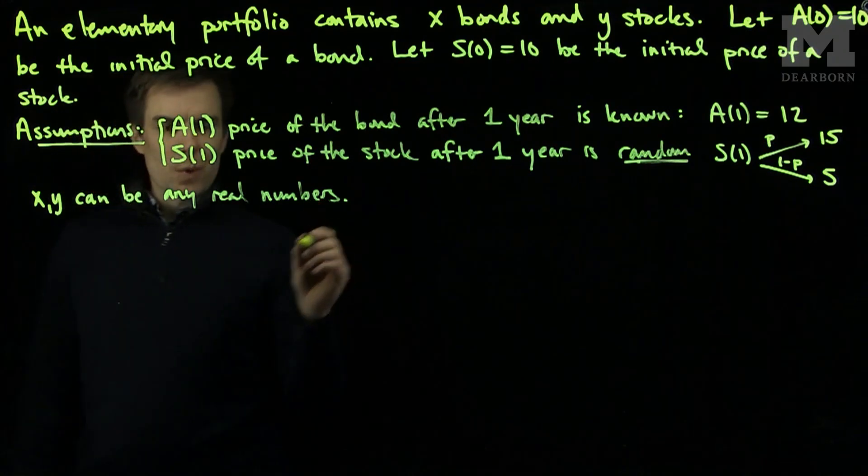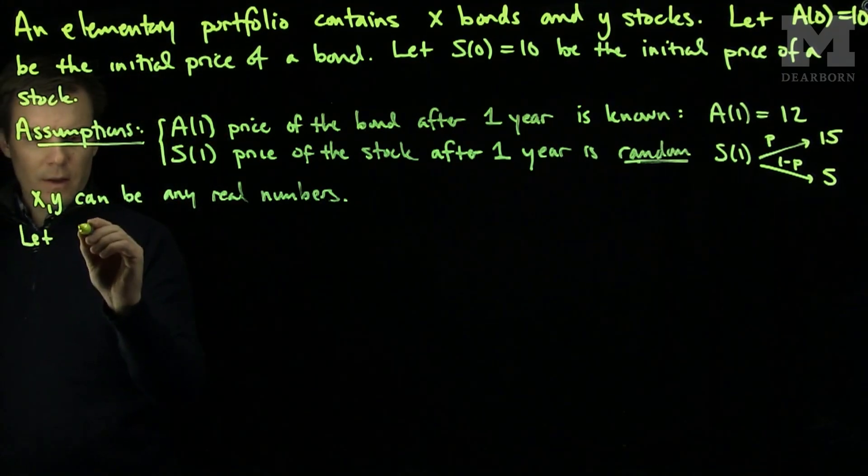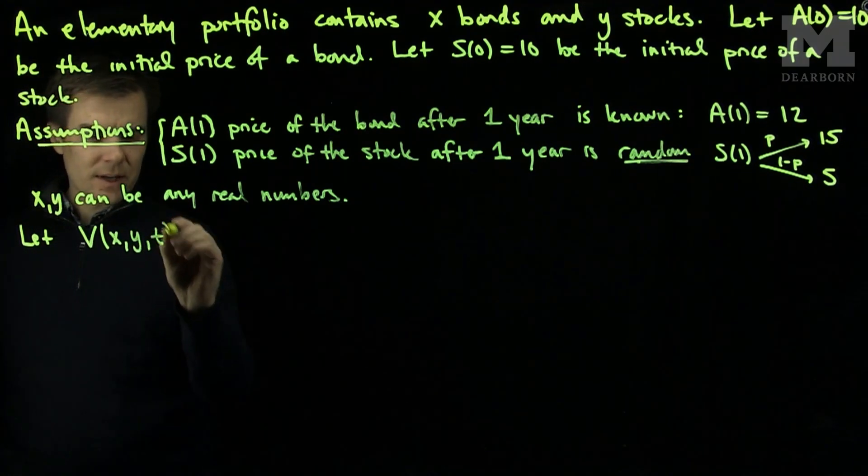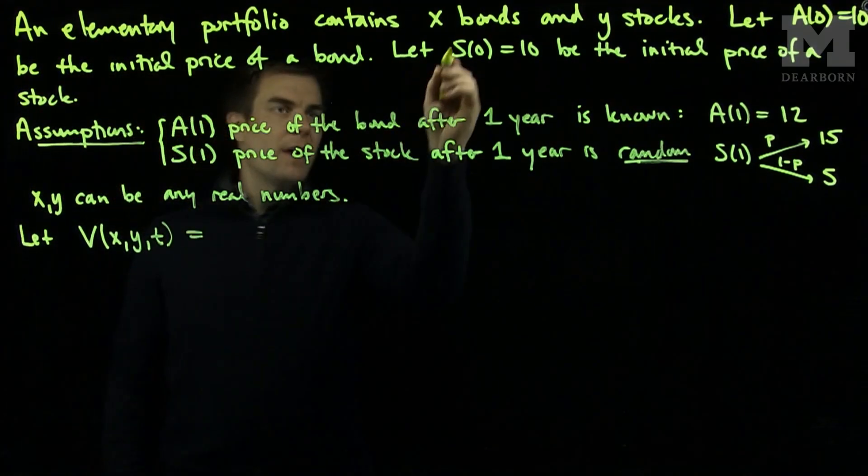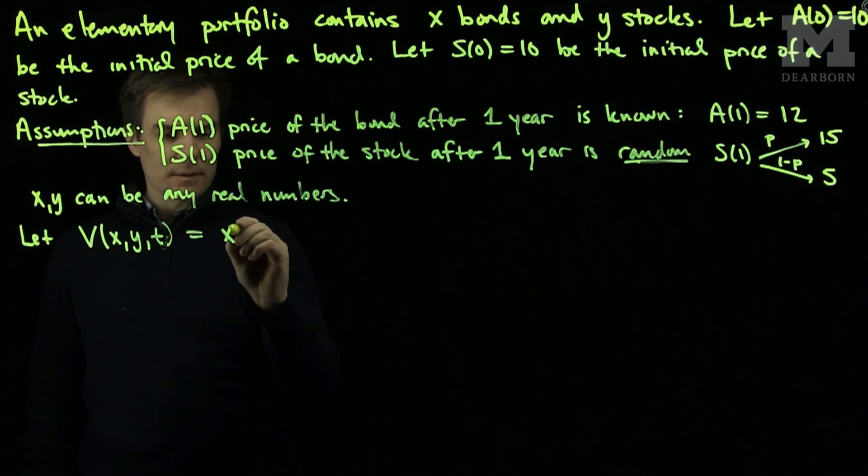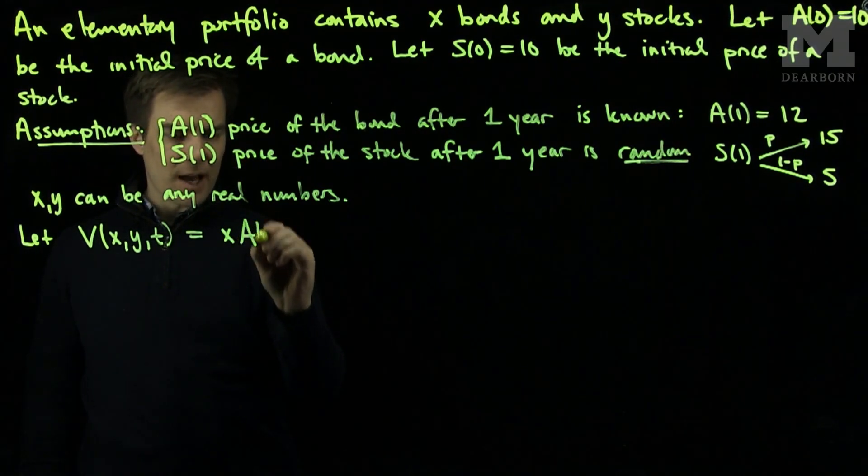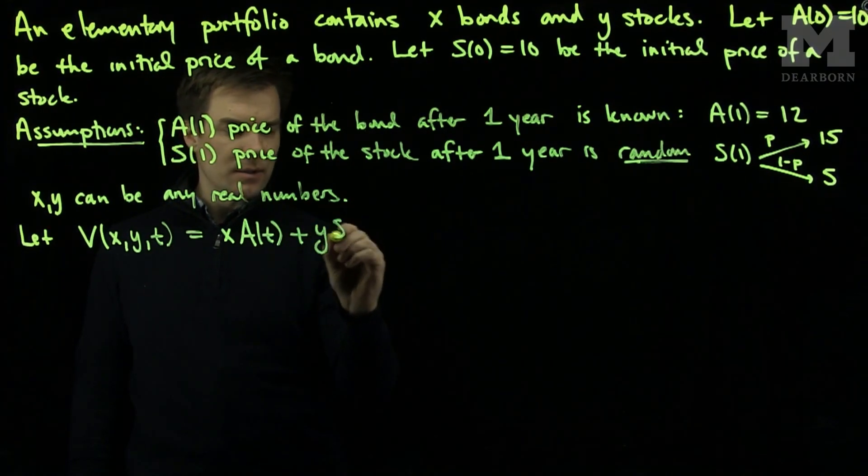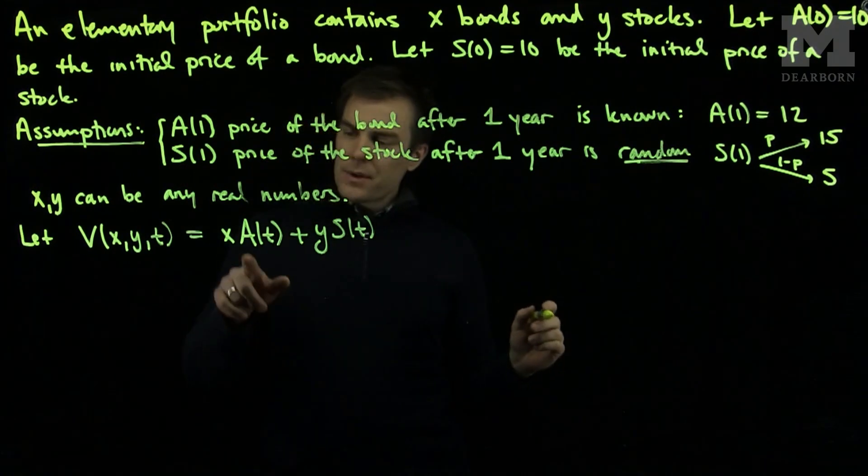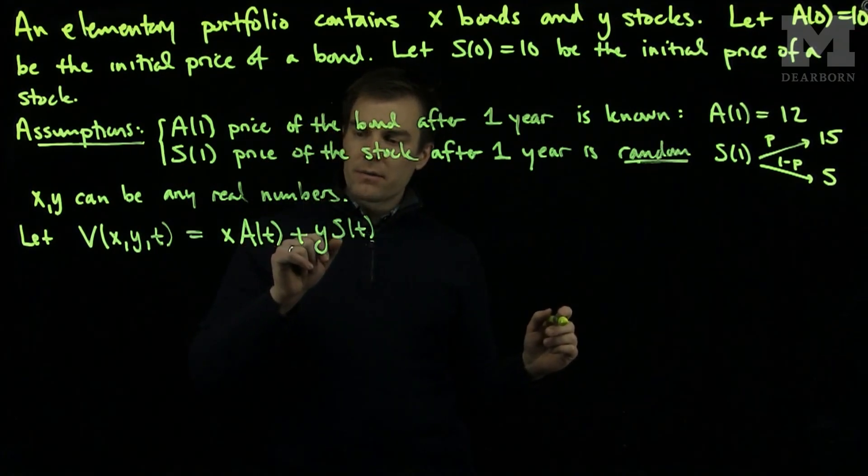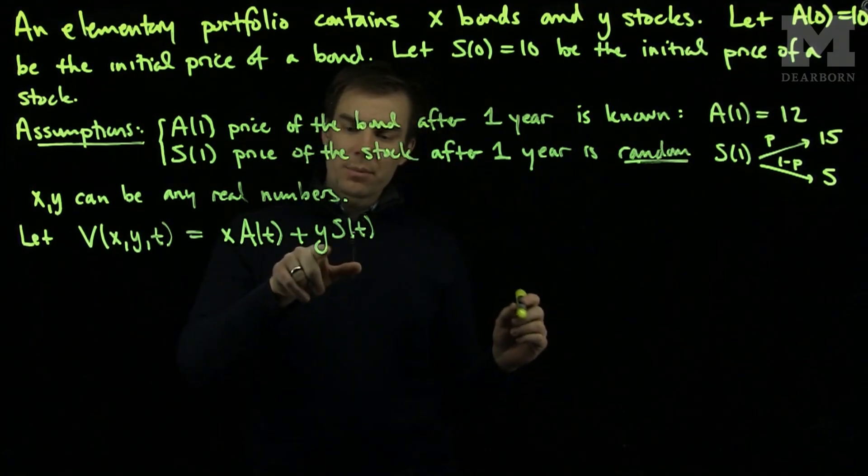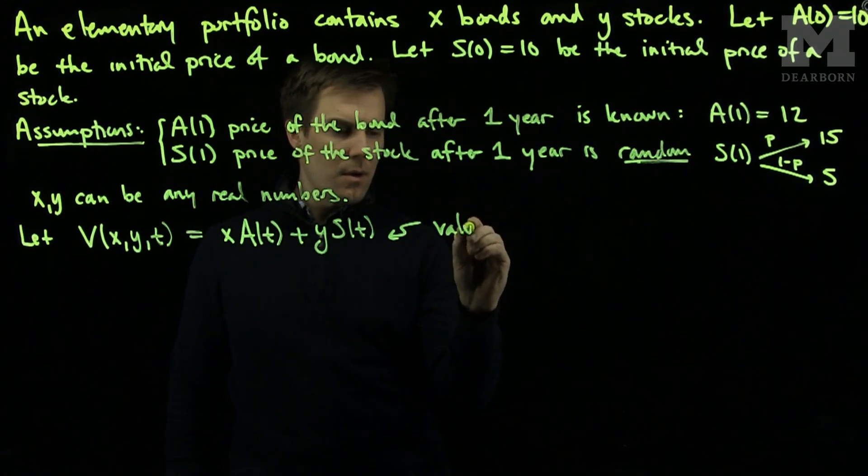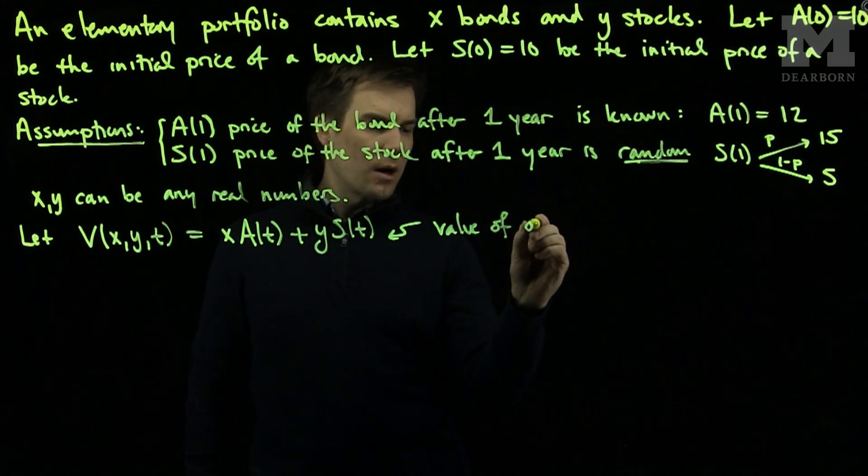Now what we'll do is we will let V(X,Y,T) equal X times A(T) plus Y times S(T). So this is going to be X times the value of bonds at time T plus Y times the value of stocks at time T. This is the value of our portfolio.